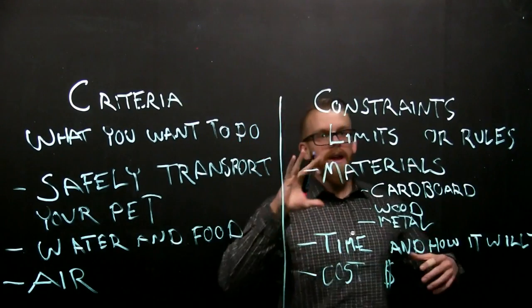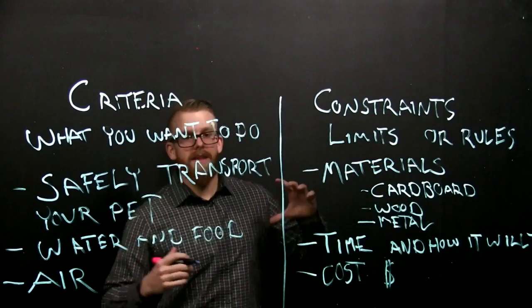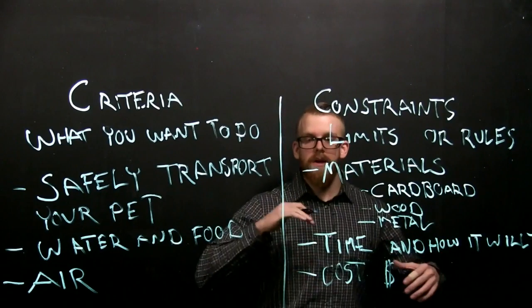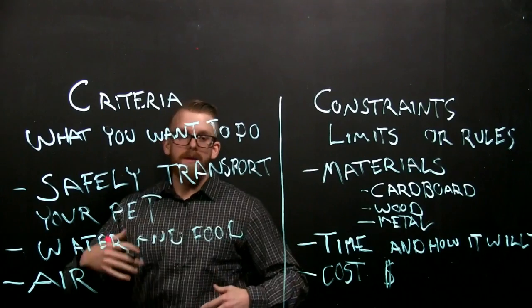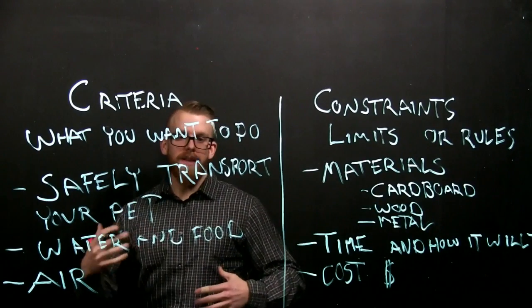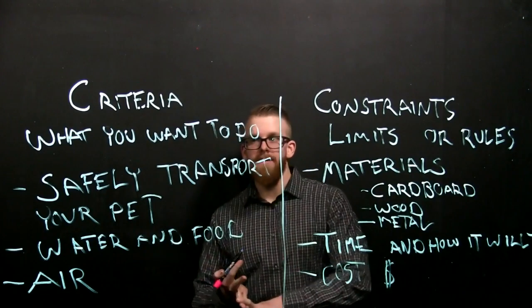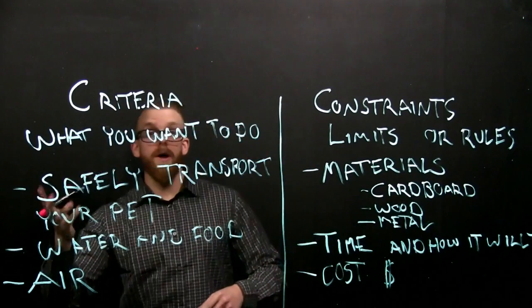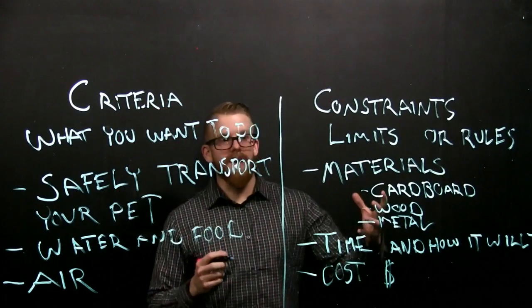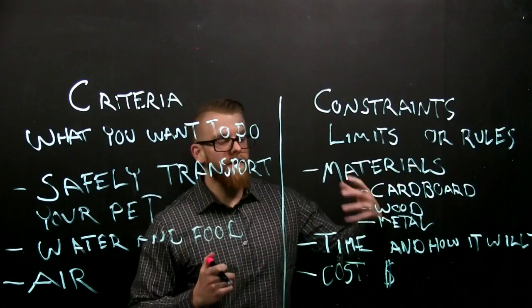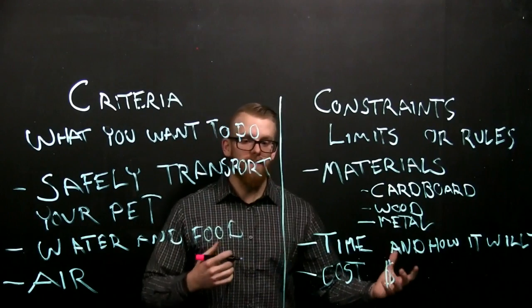Having this idea and having your constraints and your criteria is going to help you getting to the next steps of the design process, which we're going to talk about next, which is going to be the brainstorming process. So, once you start brainstorming your ideas, you need to think about your problem, some of that research you did, your criteria, so what you want your design to do, what it has to do, and then your constraints. What's going to be your limit? What materials are you going to be making it out of? How much time do you have to build it? How much is it going to cost to build?